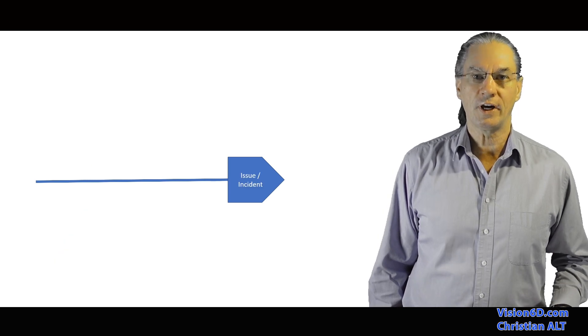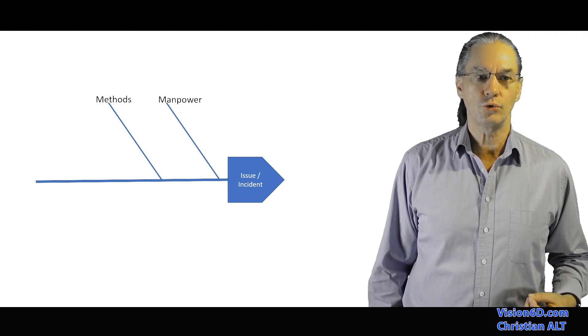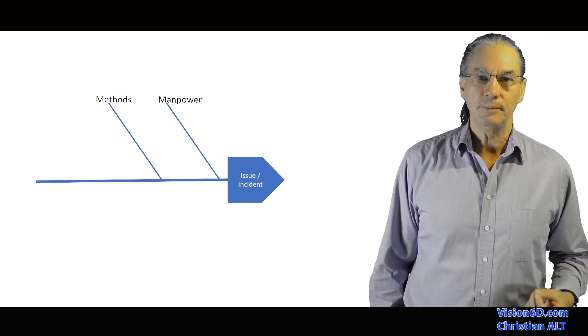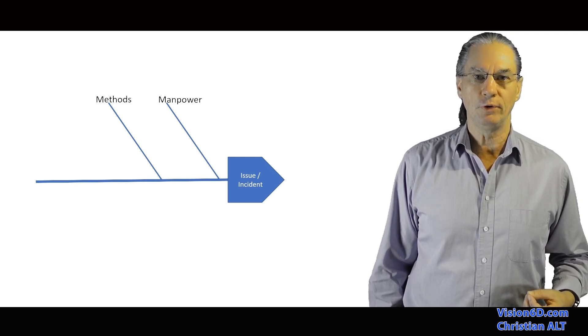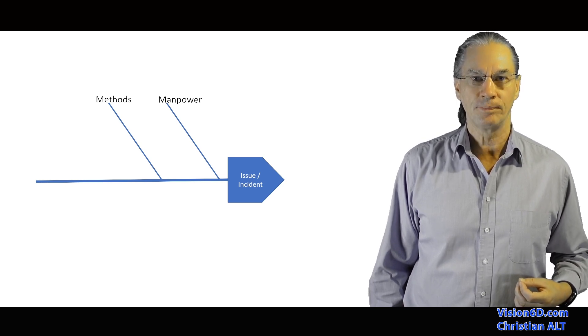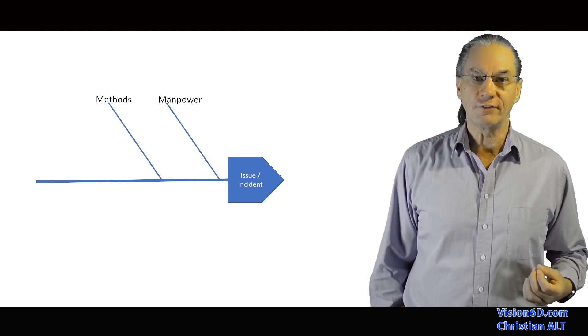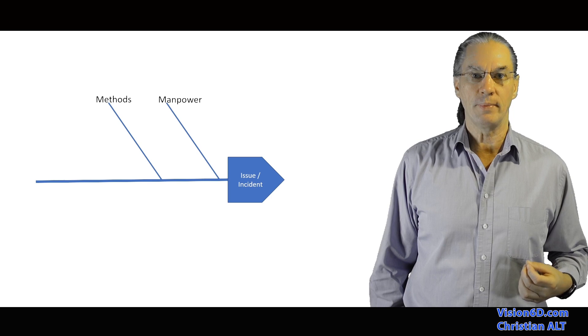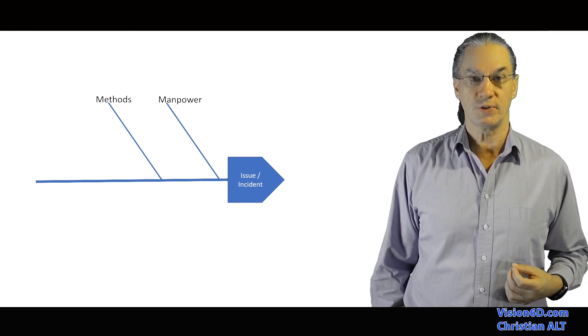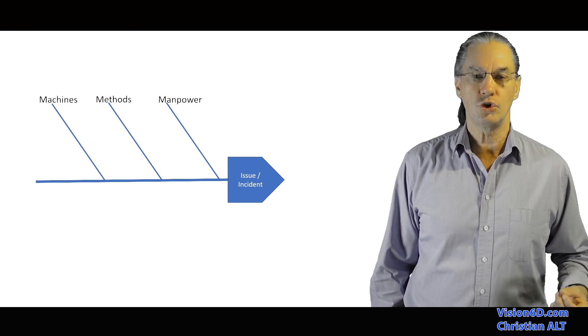What are the kinds of categories that we use? We find usually manpower, meaning do people, for example, have the knowledges they need? Do they communicate well? After that, we could have the method. And on the method, you can also understand the process that are in use. And then the machines.